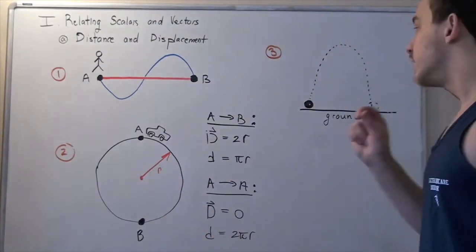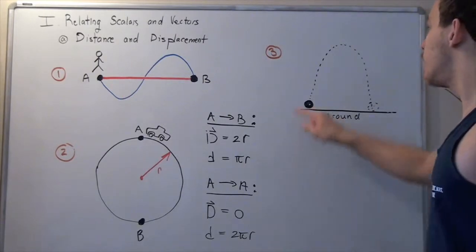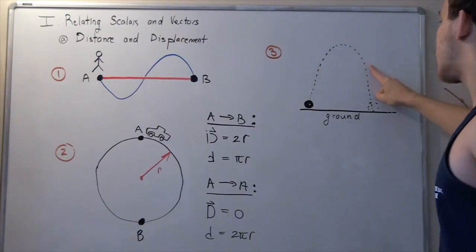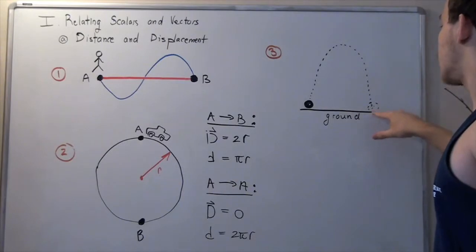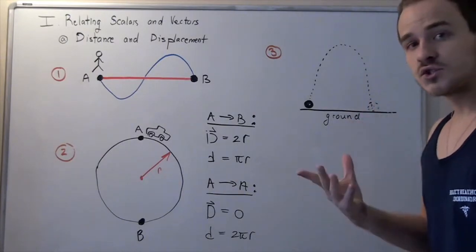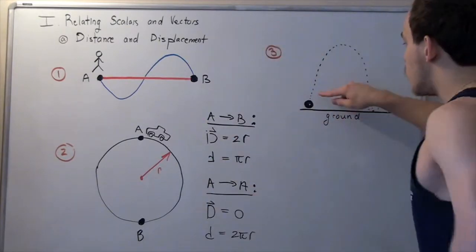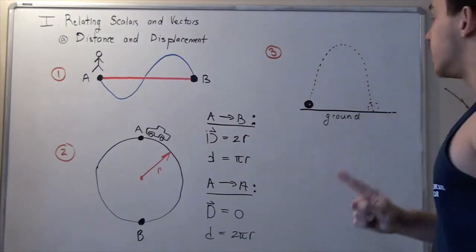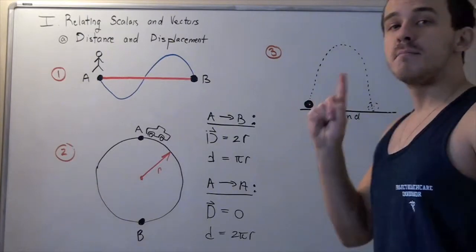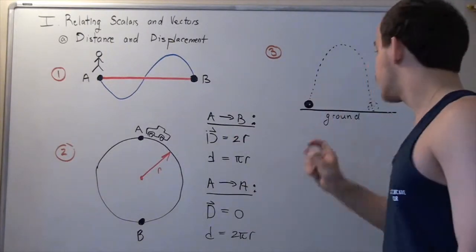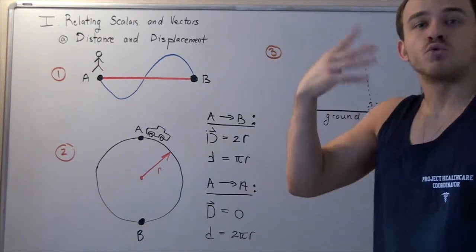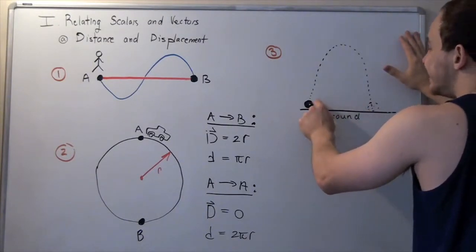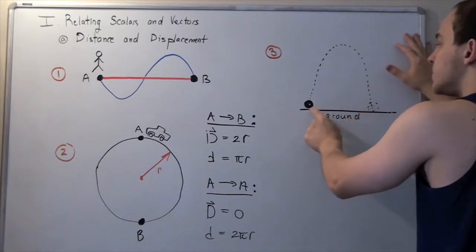Let's look at our final example. Suppose we catapult a ball in a parabolic pathway — it travels up, reaches the highest point, then comes back down and lands on the ground at a new location. The distance traveled is the actual parabolic pathway taken — if we outstretch it, that's the actual distance. The displacement is the most direct pathway the ball could have taken from the launch point to the landing point, which is a straight line between those two points.